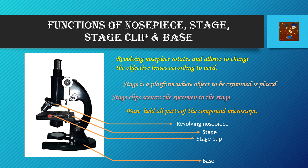The stage is the platform where we place the specimen, typically with the means of a slide. With the help of the stage clip, we secure the specimen on the stage, because if the specimen is not held tightly on the stage with the stage clip and it moves, then the image will be hazy and we cannot see it properly through the eyepiece.